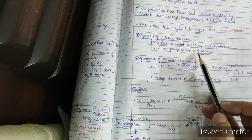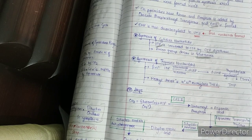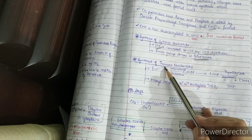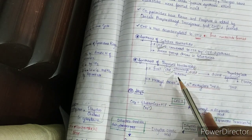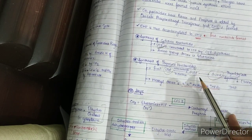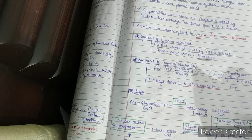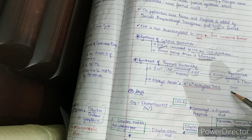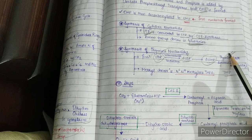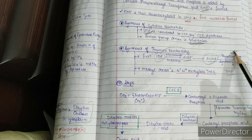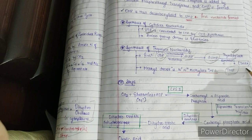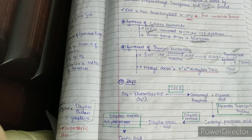For thymine synthesis, UTP is not directly converted. Instead, UMP is first converted to UDP, then UDP is converted to deoxy-UDP by the enzyme ribonucleotide reductase. Deoxy-UDP is then converted to deoxy-UMP by removal of a phosphate group. The important enzyme thymidylate synthase then converts deoxy-UMP to TMP. This enzyme is clinically significant because drugs that block thymidylate synthase block TMP formation, impacting DNA synthesis — making them useful as anti-cancer drugs.